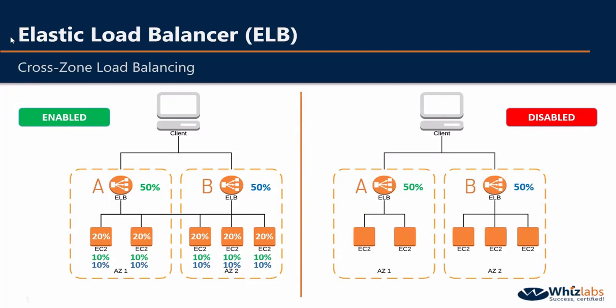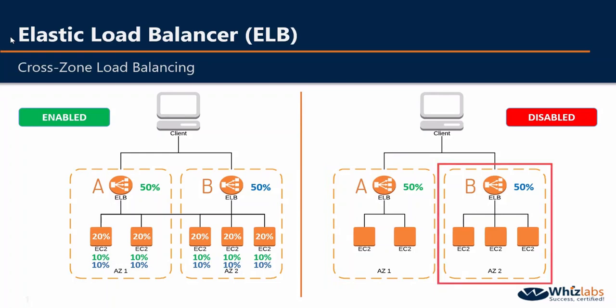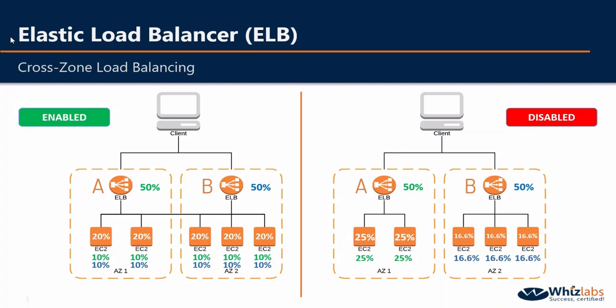When cross-zone load balancing is disabled, each load balancer node distributes traffic across instances in its own availability zone only. Elastic Load Balancer A will distribute traffic only among instances in AZ1, and Elastic Load Balancer B will route traffic only to instances in AZ2. In this example, the nodes in availability zone 1 will each bear 25% of the overall traffic, whereas the nodes in availability zone 2 will each receive approximately 16.6% of the overall traffic. Take a moment to look at this diagram and understand how balancing is done when cross-zone load balancing is enabled versus disabled.